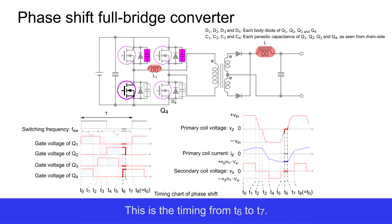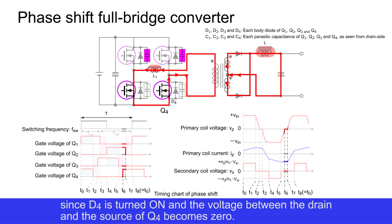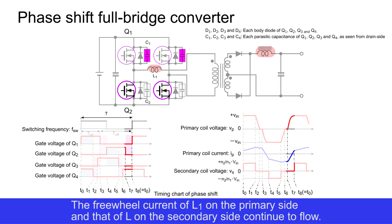This is the timing from T6 to T7. Q4 is turned on. At the start of on, it starts with soft switching since D4 is turned on and the voltage between the drain and source of Q4 becomes zero. The freewheel current of L1 on the primary side and that of L on the secondary side continue to flow.